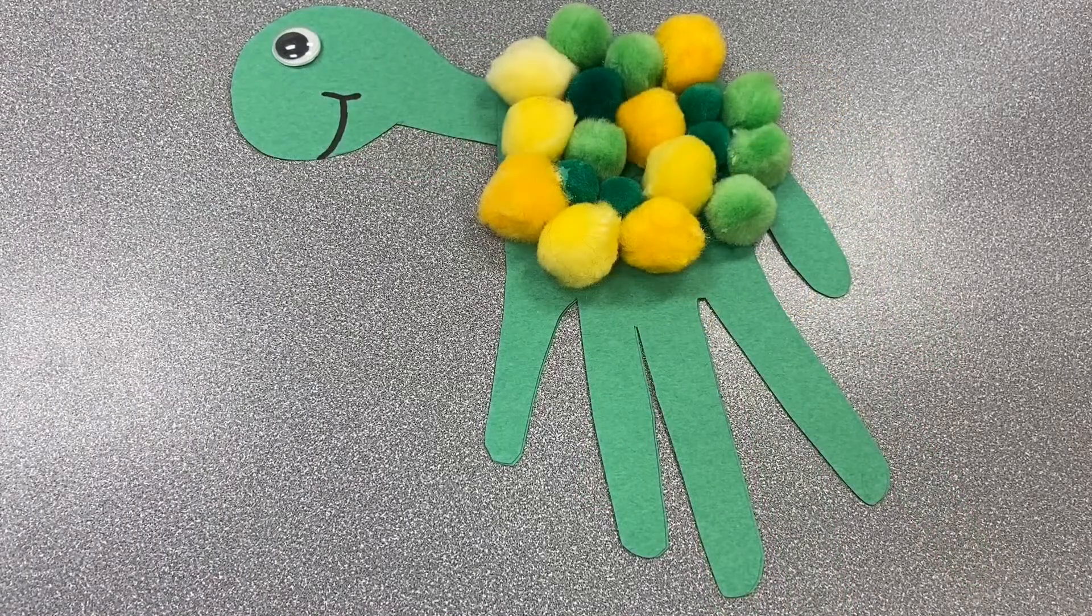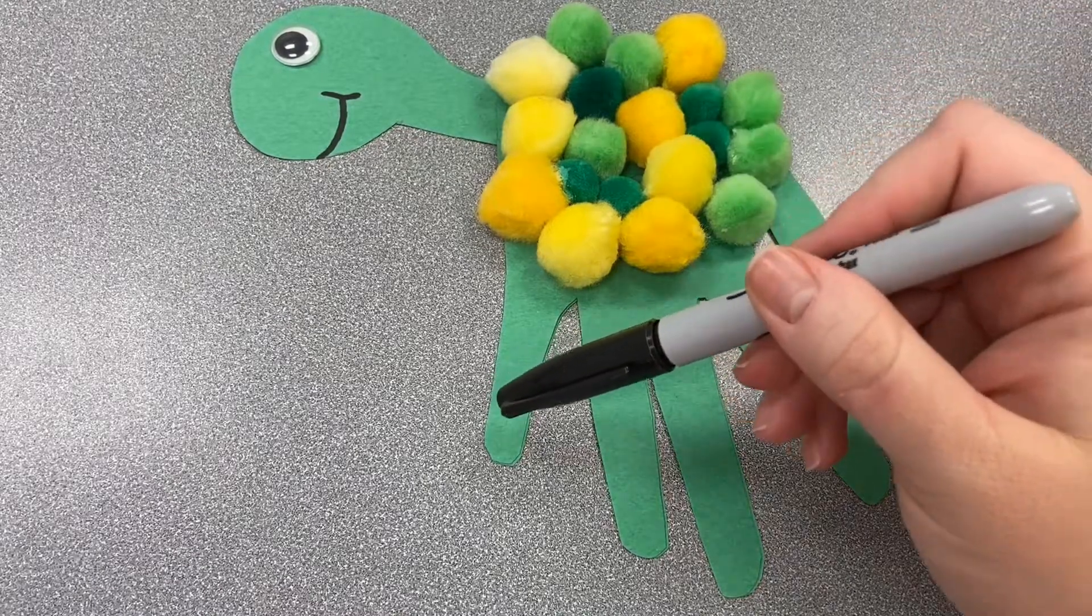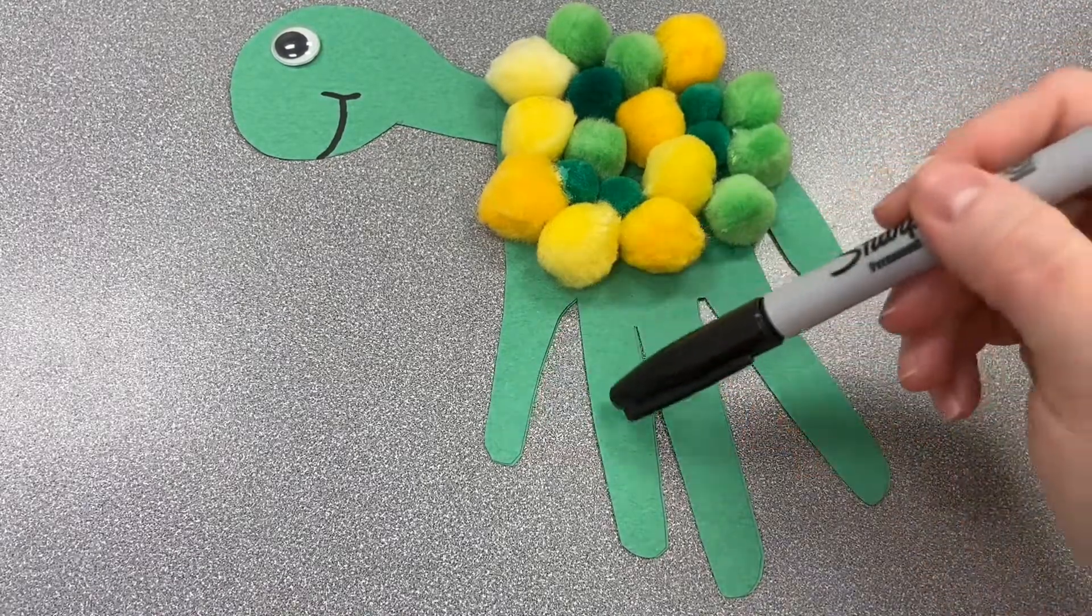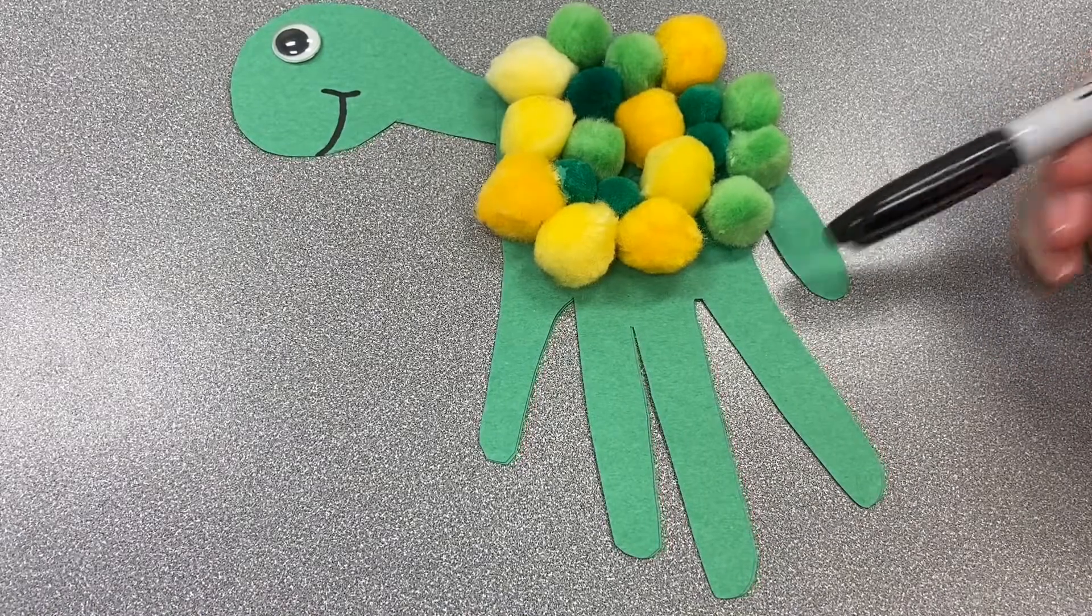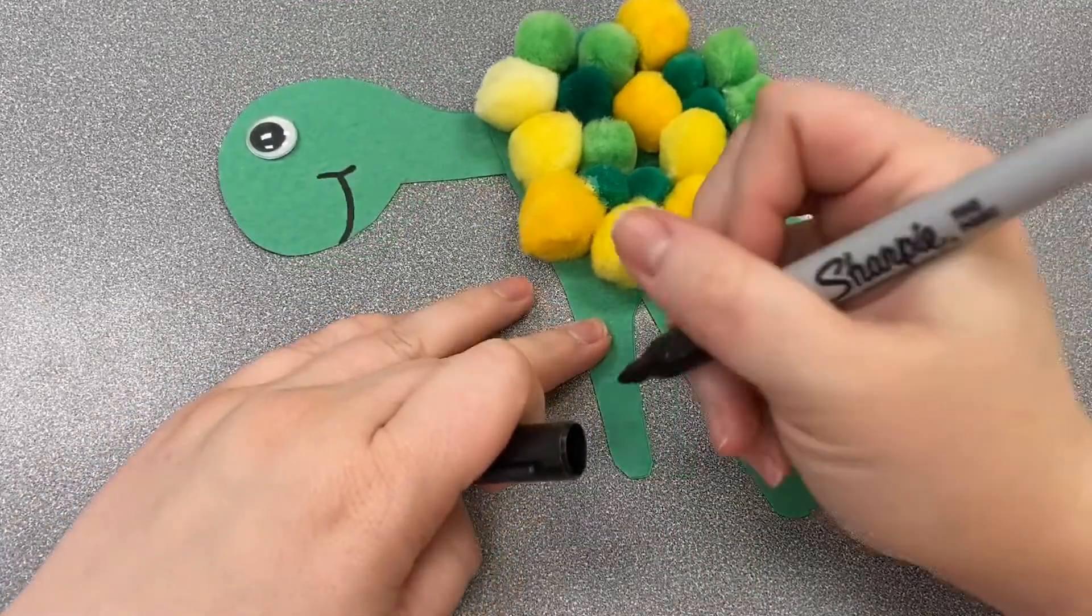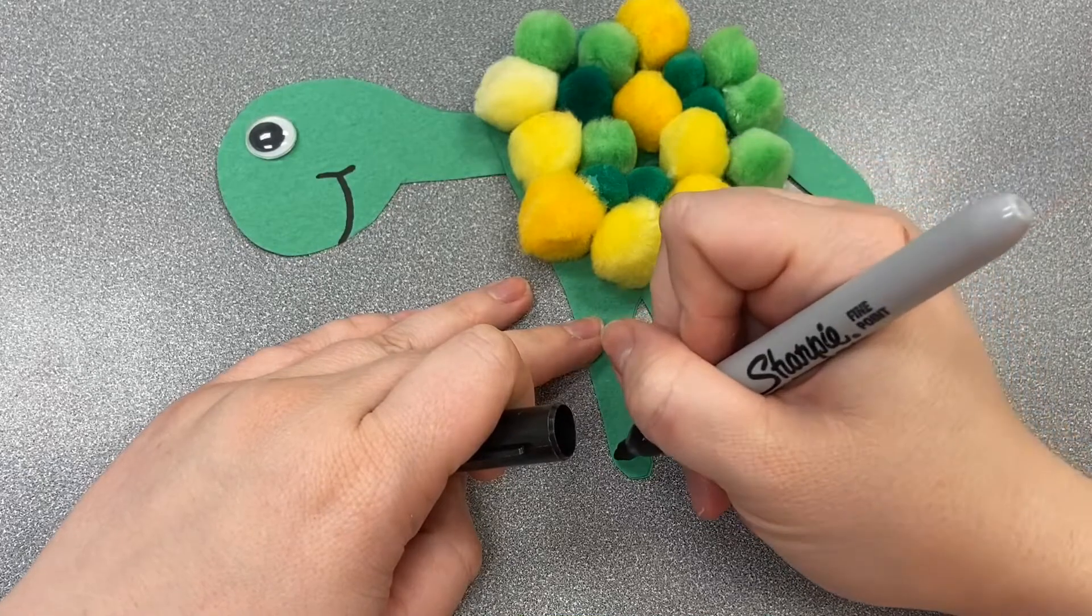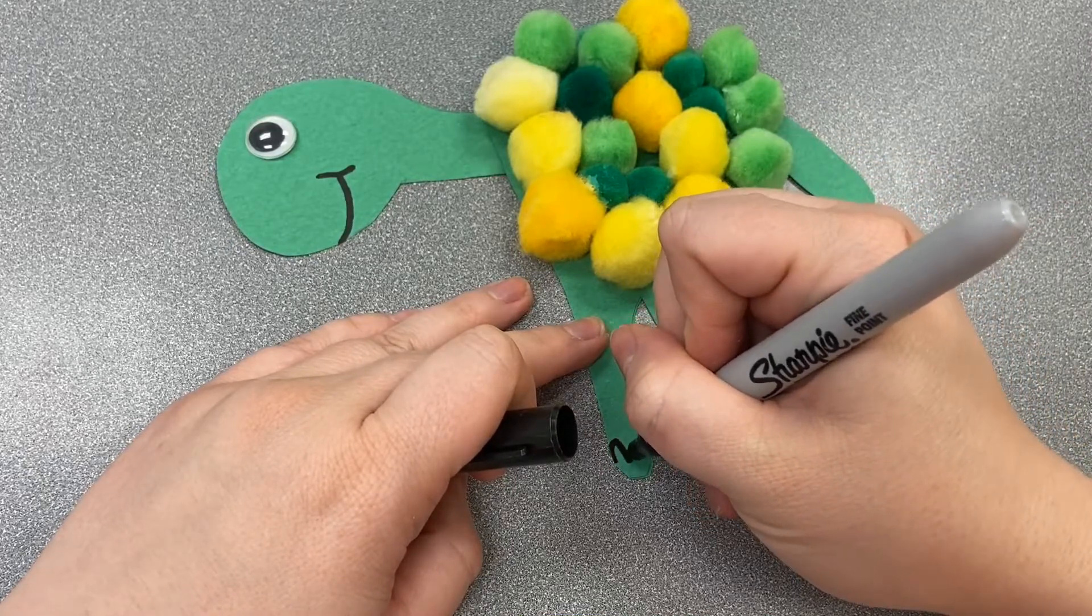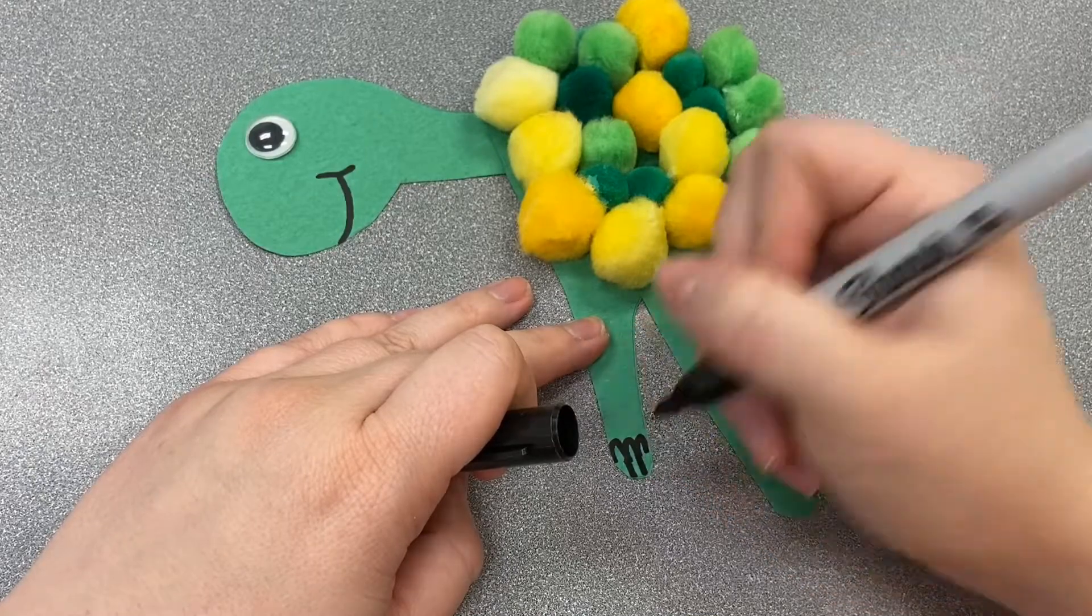Then we're going to draw our turtle some little toes. We're going to draw him some toes on four legs which are the four fingers right here. And then leave this one with no toes because that's his tail. So I'm going to draw him three little toes on each leg. Can you see? Go one, two, three.